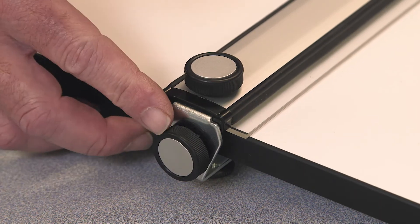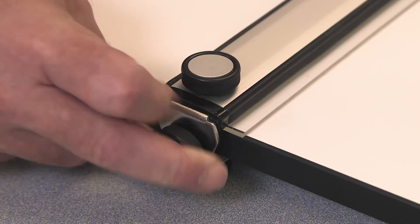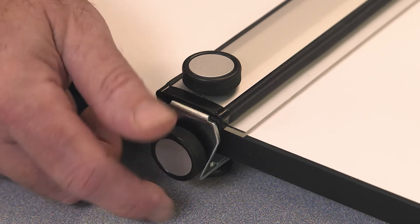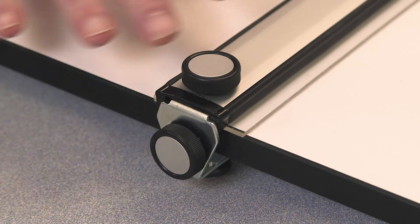Turn the large knobs on both ends to loosen the brake and gently tighten the same knobs to lock the straight edge in the desired position.